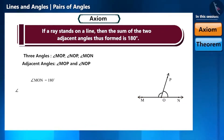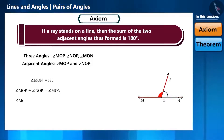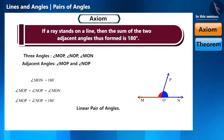By looking at the figure, we can easily say that angle MOP plus angle NOP is equal to angle MON. Therefore, angle MOP plus angle NOP is equal to 180 degrees. And if the sum of the two adjacent angles is 180 degrees, then they form a linear pair of angles.